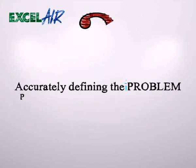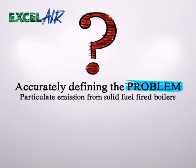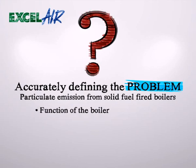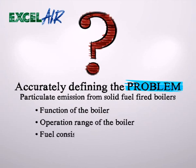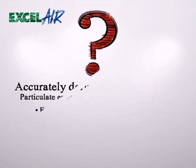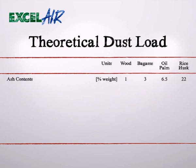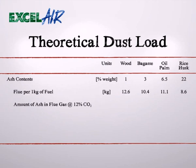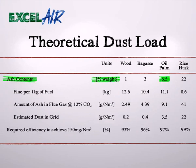To accurately define the problem, we have to know and understand the following: the function of the boiler, the operation range of the boiler, fuel consistency, and variations in flue gas conditions. The concentration of dust in the flue gas depends primarily on the ash content of the fuel. Different fuels have different ash contents, so in order to design our dust collector, we need to know what type of fuel will be used.